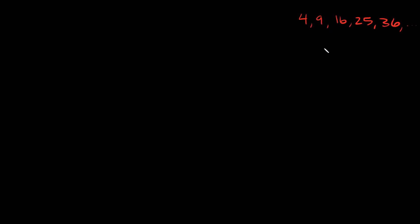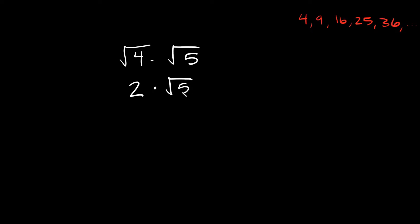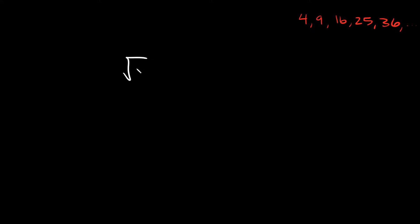Knowing these numbers is going to be really helpful for multiplying radicals. So for example, if we had something like the square root of 4 times the square root of 5, whenever you see a perfect square like this, you always want to just simplify it. The square root of 4 is equal to 2, so really here we have 2 times the square root of 5. The square root of 5 can't be simplified anymore — it's not a perfect square, and it's also prime. So we would just leave it as 2 times the square root of 5. That would be your answer.